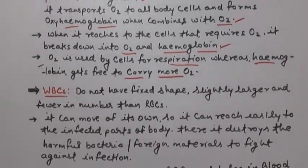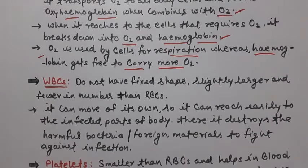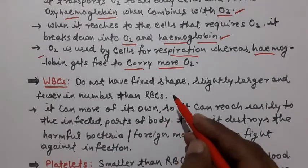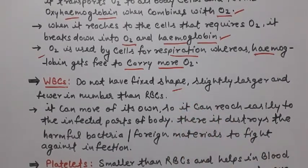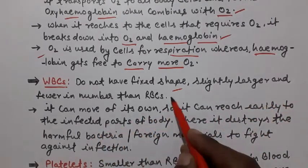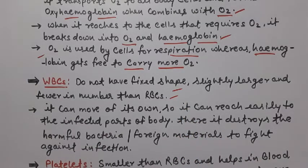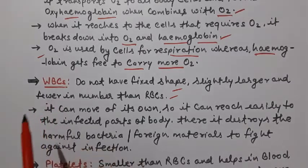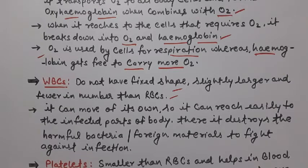Now let's move towards WBCs. They don't have any fixed shape. But we can say that WBCs — white blood cells — are slightly larger and fewer in number than RBCs, meaning red blood cells.